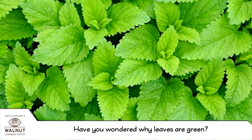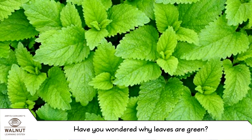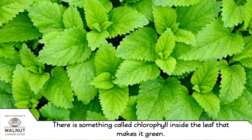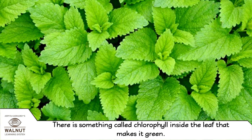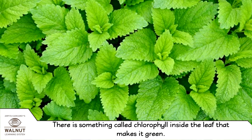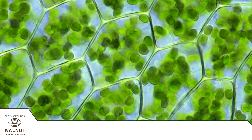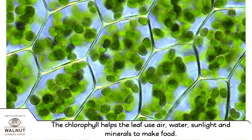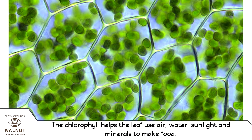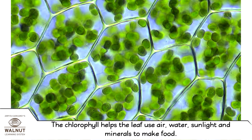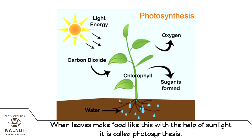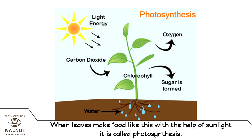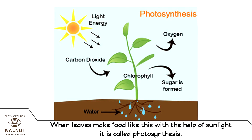Have you wondered why leaves are green? There is something called chlorophyll inside the leaf that makes it green. The chlorophyll helps the leaf use air, water, sunlight, and minerals to make food. When leaves make food like this with the help of sunlight, it is called photosynthesis.